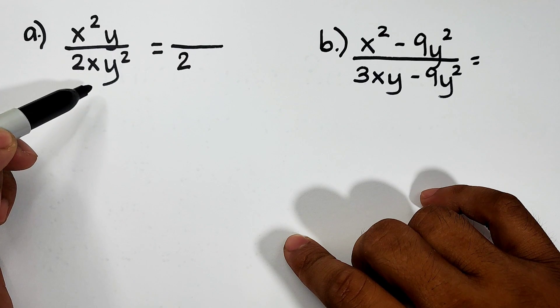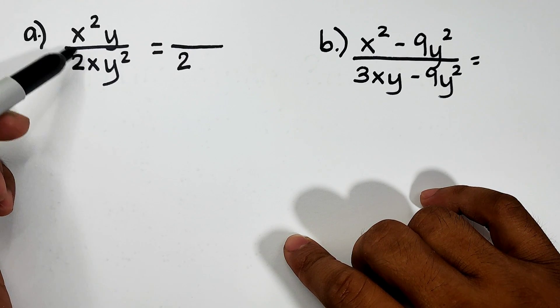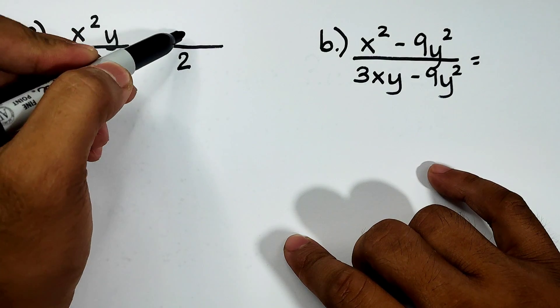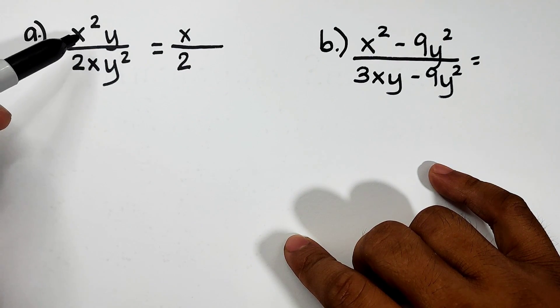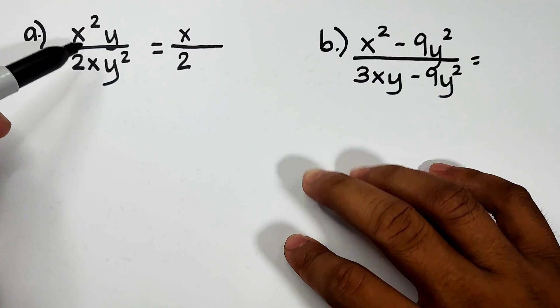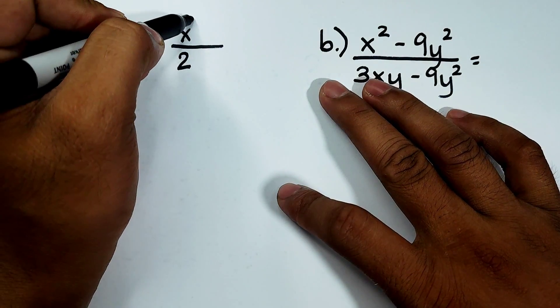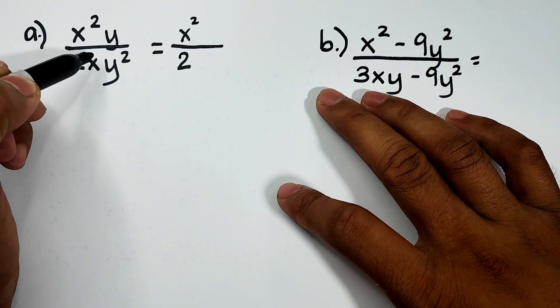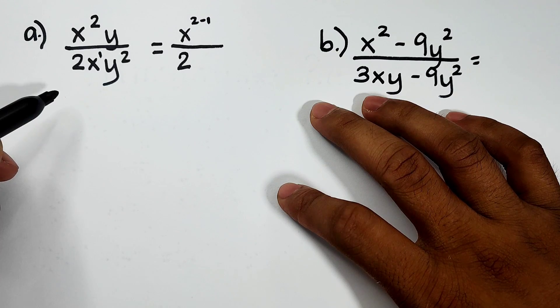As for the variables, what you need to do, as you can see, your x variable with the same base, put it up here. And then since this one is quotient, we need to subtract the exponent. The exponent of x in the numerator is 2, while the exponent of x in the denominator is 1. So that is 2 minus 1.